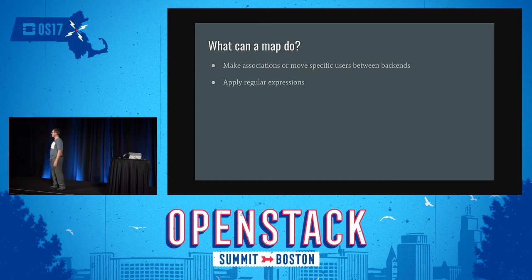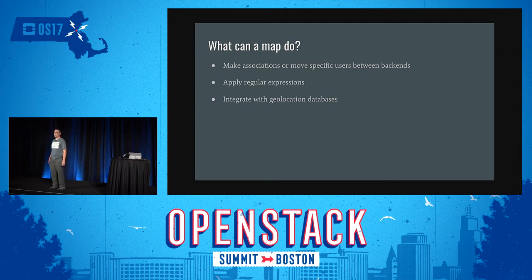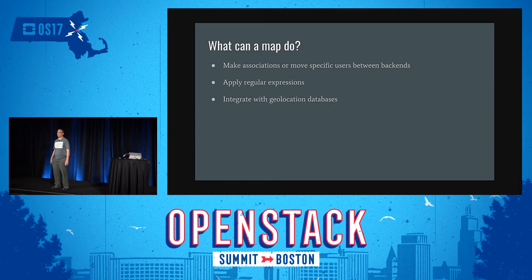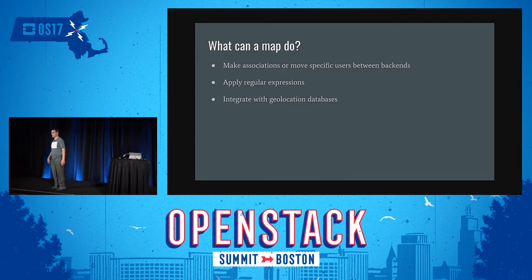The next thing is geolocation databases. For enterprise customers, we have a collection of scripts that can convert MaxMind GeoIP databases into map files, and this allows you to put them into HTTP headers. So your backends can just check an HTTP header to find out where a client is located, or if you're doing denial-of-service attack protection, it is very useful to take the location and put it as part of an ACL to apply stricter rate limits to a specific location as compared to the rest of the world.